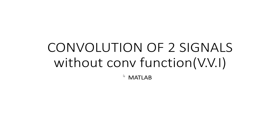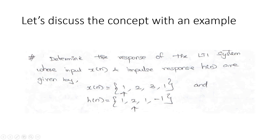So, without using the conv function, how can we solve it? Let us try to understand. Before going to the algorithm or the code for convolution of two signals, let us have a quick recap of how we solve it in general. There are different methods, but the easiest is the matrix method. So suppose the question is: determine the response of the LDI system where input x(n) and impulse response h(n) are given by x(n) = [1, 2, 3, 1] and h(n) = [1, 2, 1, -1].